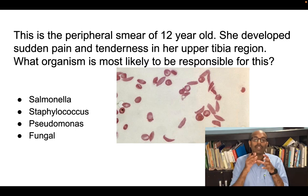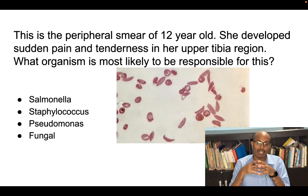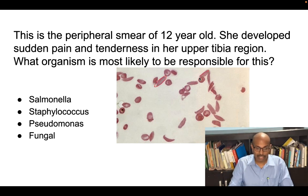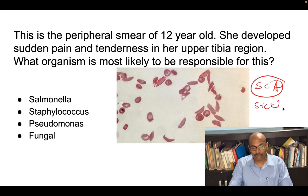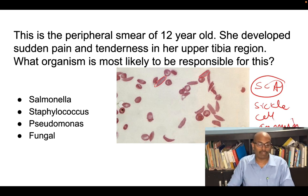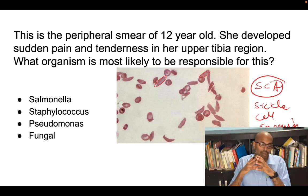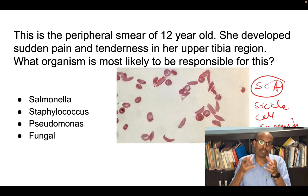The first question was: a 12-year-old girl presented with a peripheral smear shown in the picture. The peripheral smear shows sickling of the red blood cells — it's a very clear case of sickle cell anemia. This is a spotter; you have to pick it up from the picture. She then developed sudden pain and tenderness in her upper tibia region. What organism is most likely responsible? This indicates osteomyelitis.